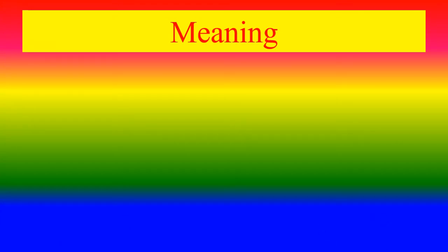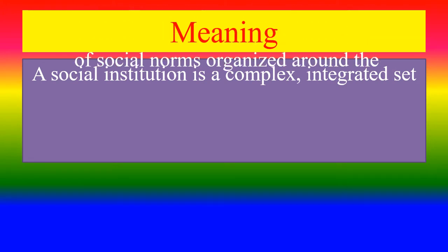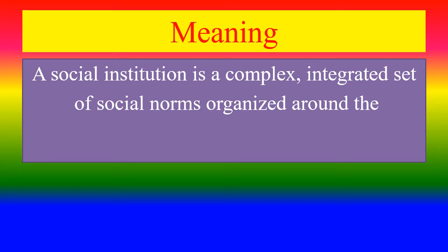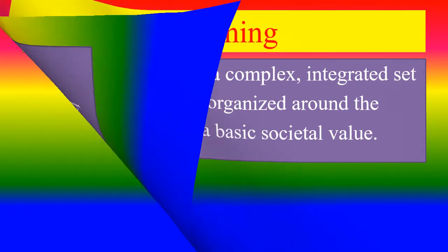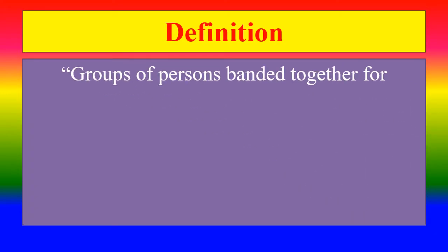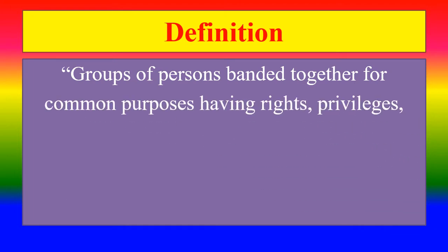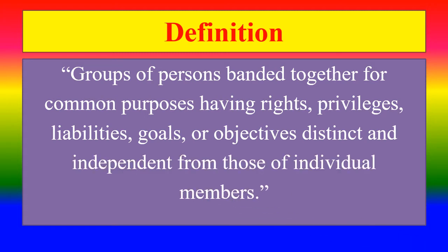What is meant by Social Institution? A Social Institution is a complex, integrated set of social norms organized around the preservation of basic social value. It can also be defined as a group of persons banded together for a common purpose, having rights, privileges, liabilities, goals or objectives distinct and independent from those of individual members.